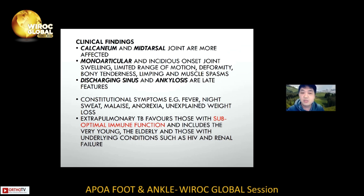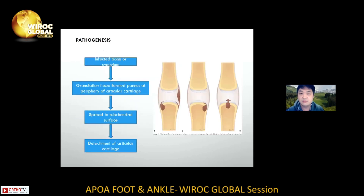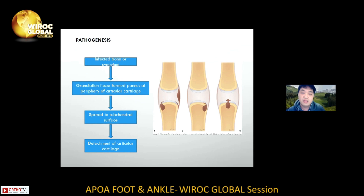Just like pulmonary TB, patients may have constitutional symptoms such as fever, night sweats, and malaise. There are concerns regarding extra-pulmonary TB favoring patients with suboptimal immune function, such as very young patients, the elderly, and patients with HIV or renal failure. Regarding pathogenesis, it affects the bone and synovium at the beginning.